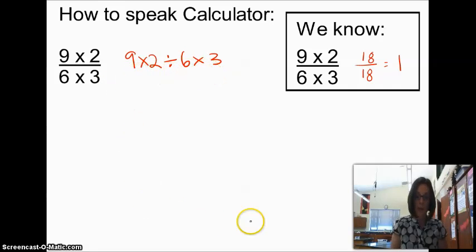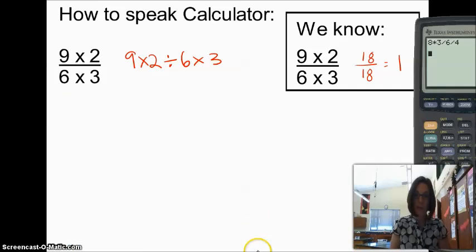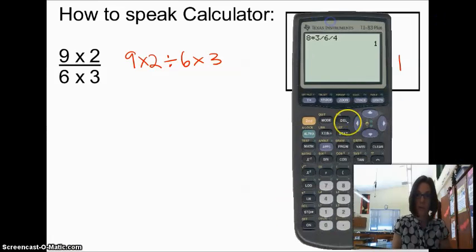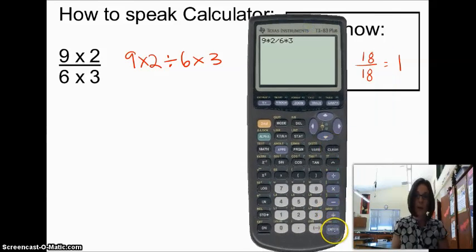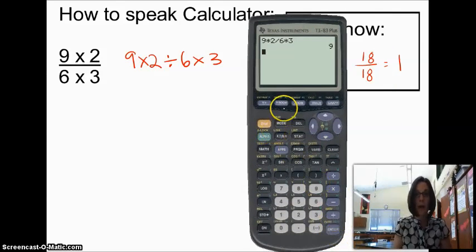Well, remember PEMDAS. Your calculator is going to do PEMDAS, so your calculator is going to do it this way. Let's clear this off the screen. It's going to do 9 times 2 divided by 6 times 3. Now remember, we know the value of this expression to be 1. Your calculator is going to give you 9 here because it did 9 times 2, that's 18. Divided by 6, that's 3. Times 3, that's 9.